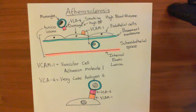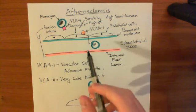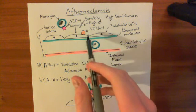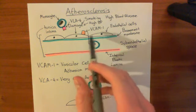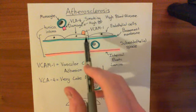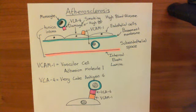Now, what will happen is the VLA-4 on the monocyte will bind to the VCAM-1 on the endothelial cell, and that will adhere the monocyte to the endothelial cell. That monocyte will then diapedese across the junction between two endothelial cells, and then move across the basement membrane into the subendothelial space.